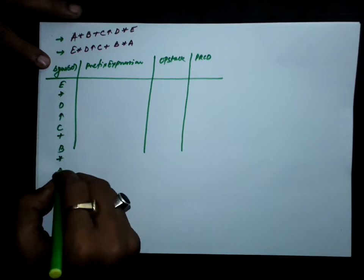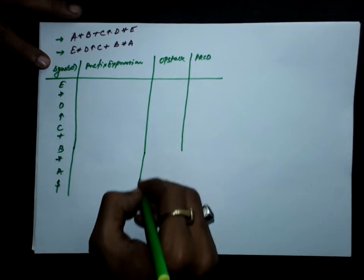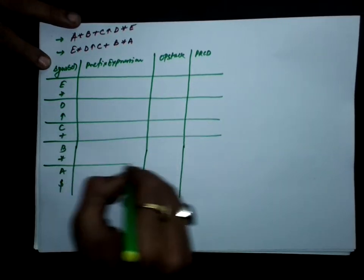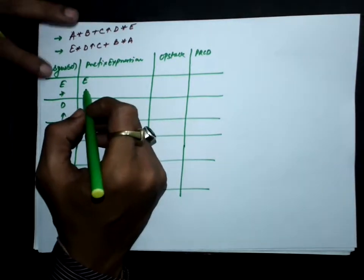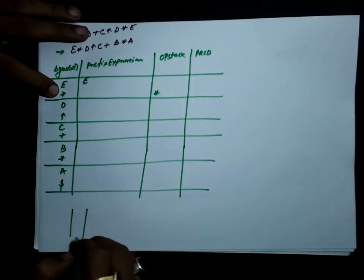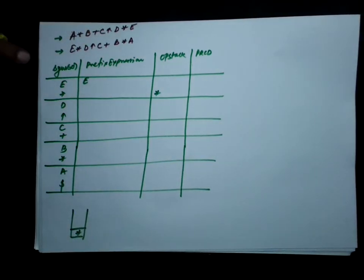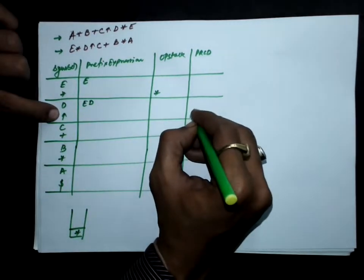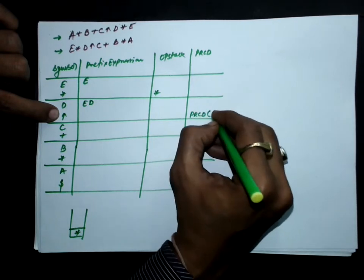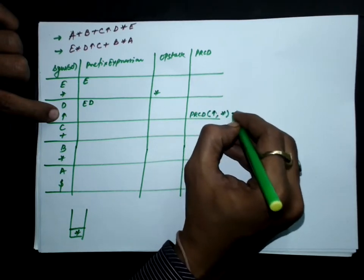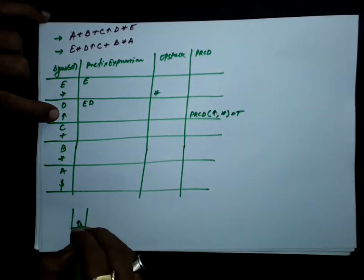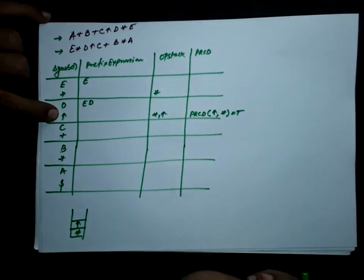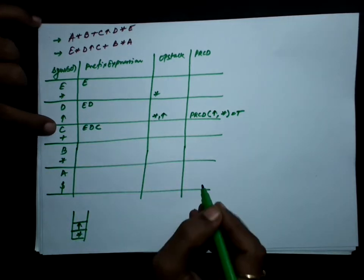E is an operand, added to the prefix expression. Multiplication is an operator; the stack is empty, so push it on the stack. D is an operand, added to the prefix expression. Exponent: the stack is not empty, so let's check the precedence — precedence is checked for symbol over stack top, which is true. In case of true, we push the symbol on the stack, so exponent is pushed alongside multiplication.